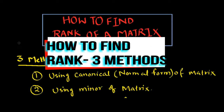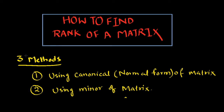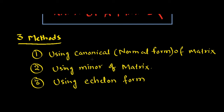Hi everyone. In this video we will learn how to find the rank of a matrix. We have three methods here. If you want to find the rank of a matrix, we can use any of these three methods. The first one is using the canonical form of matrix, which is also known as the normal form of matrix.